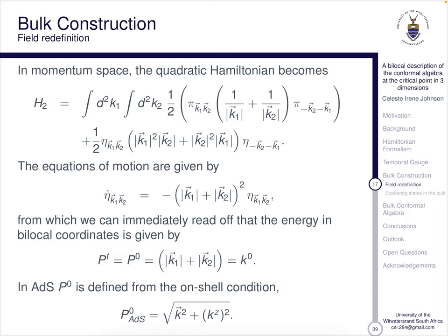Now let's take a look at our quadratic Hamiltonian. What is our aim? We're trying to look at what this quadratic Hamiltonian is going to look like in the AdS coordinates instead of integrating over bilocal coordinates. Notice we've got a Jacobian-like term that just seems to pop up everywhere. We get certain equations of motion, and from that we can immediately obtain the time coordinate of the momentum, which is p0, which is literally just the sum of the energies if there were two particles. And then we've got in AdS an on-shell condition which is equivalent to the square root of mod k squared plus kz squared.